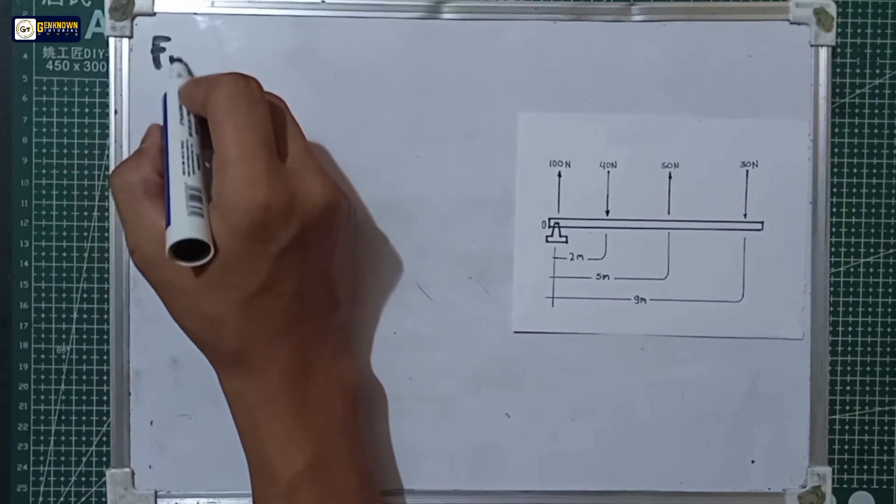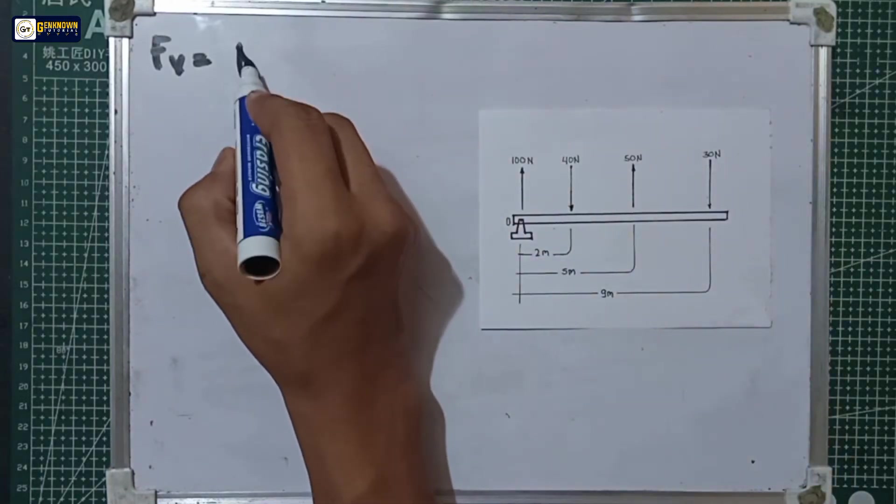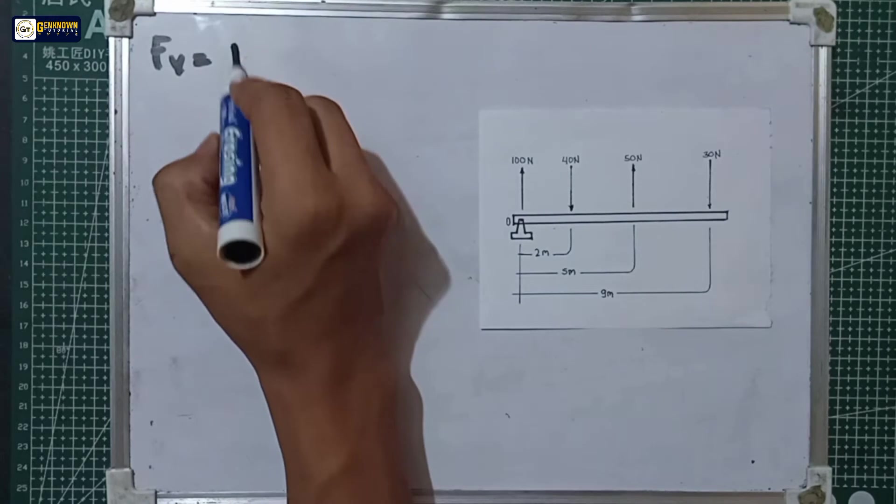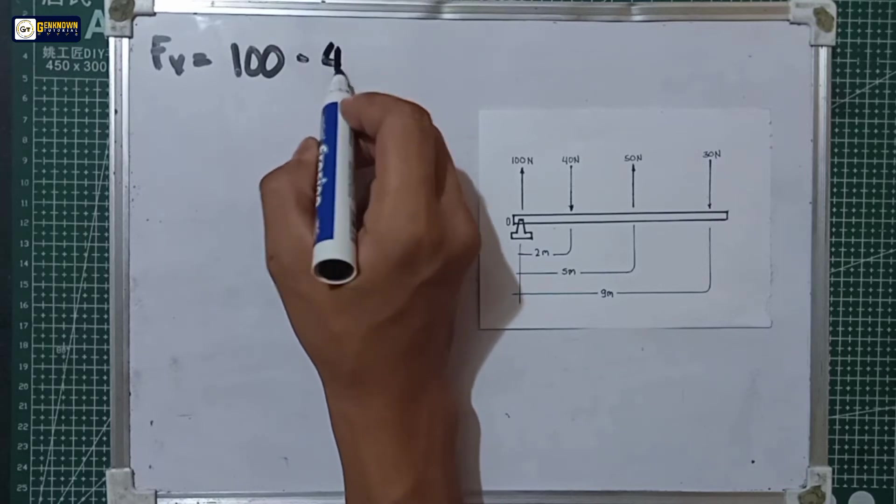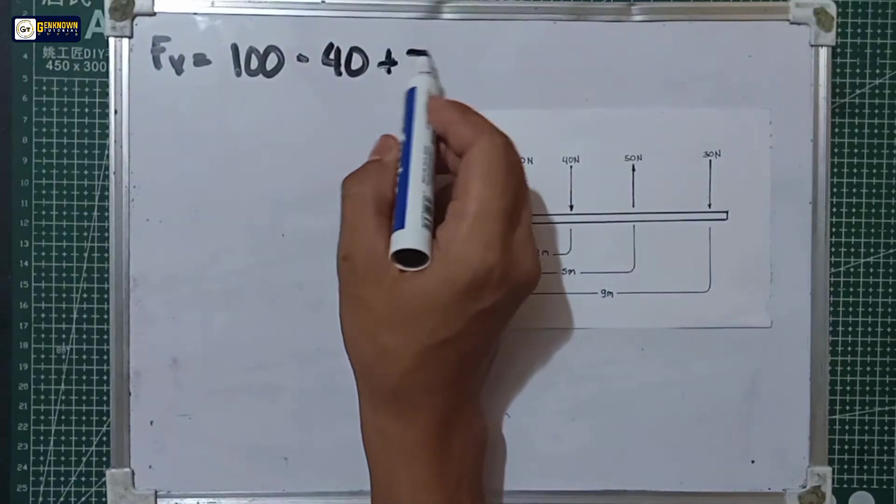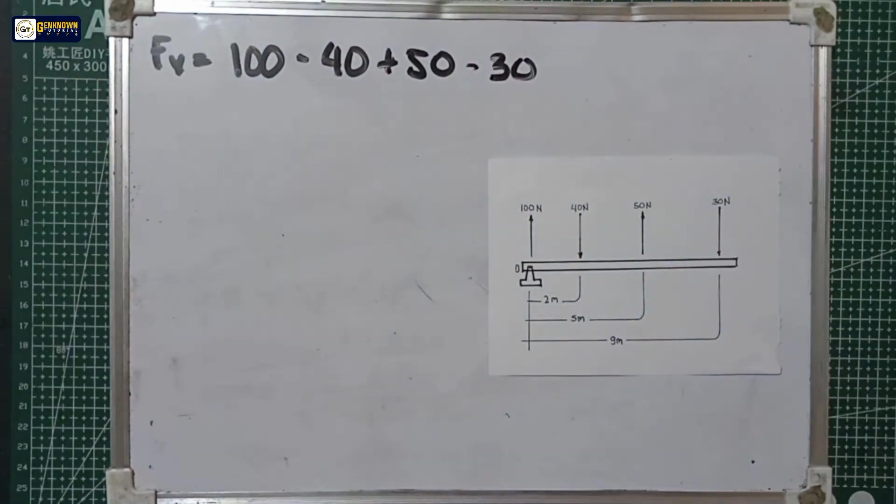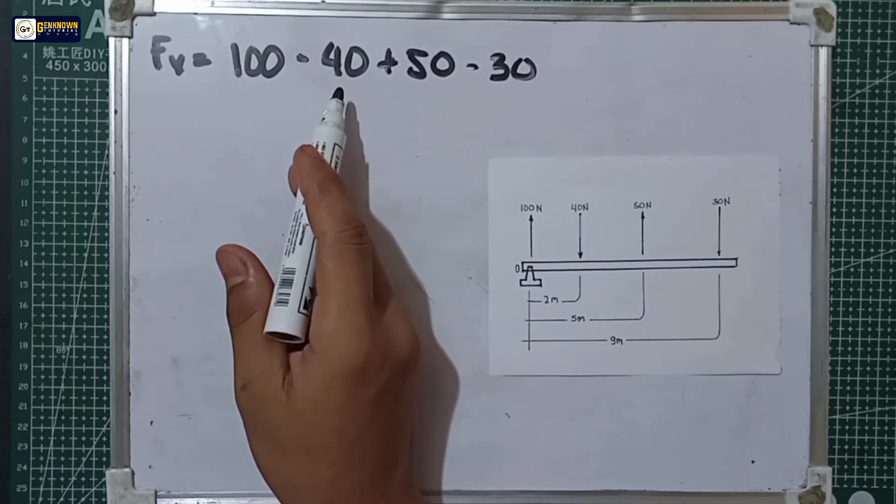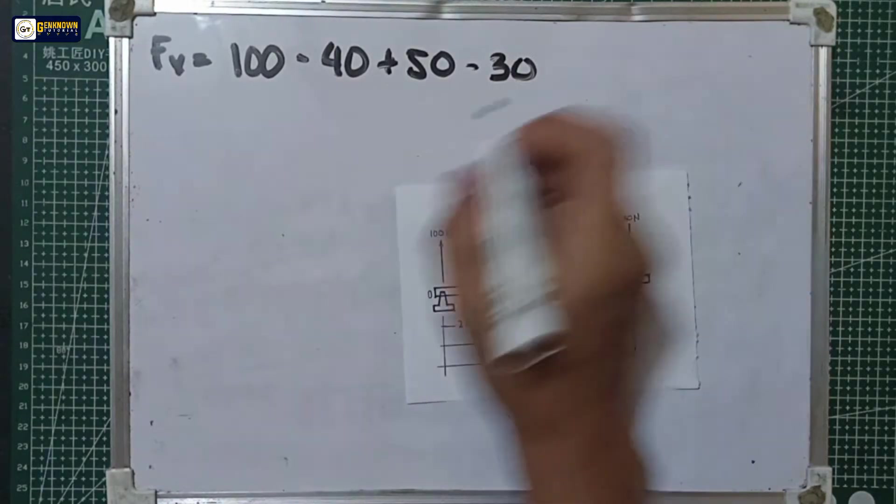Since we don't have horizontal forces here, we'll just find the vertical forces. Let's say the vertical forces or the FV is equal to the summation of these forces: we have 100 newtons downward, minus 40 newtons upward, plus 50 newtons downward, minus 30 newtons. So 100 minus 40 is 60, plus 50 is 110, minus 30 is equal to 80.